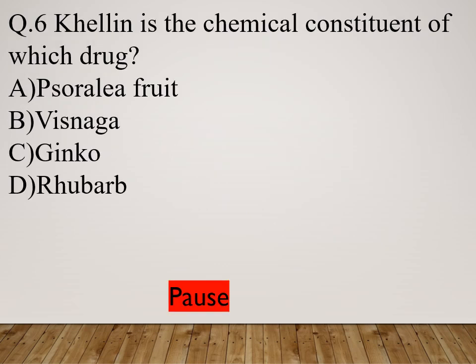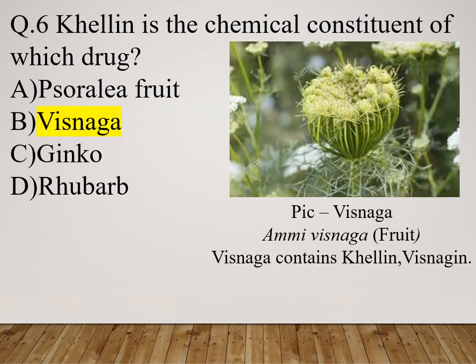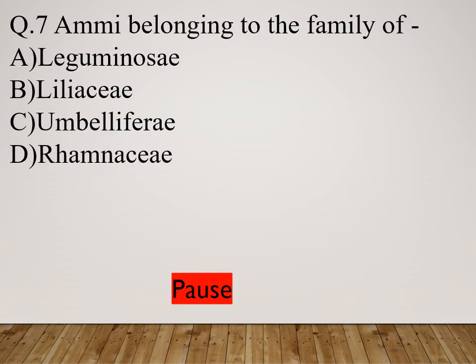Question 6: Khelin is the chemical constituent of which drug? Option A: Soralia fruit. Option B: Visnaga. Option C: Ginkgo. Option D: River. The right answer is Visnaga. Ammi visnaga fruit is mainly used. Visnaga contains khelin and visnagin.